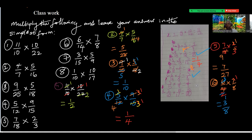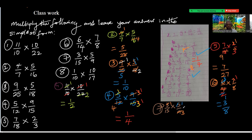Number seven: 3 over 15 times 5 over 9. 3 and 9: 3 into 3 is 1, 3 into 9 is 3. Then 5 and 15: 5 into 5 is 1, 5 into 15 is 3. So we have 1 over 9. Write your 1 clearly so it doesn't look like a 7.